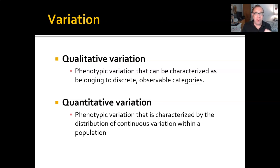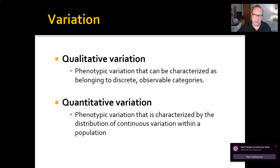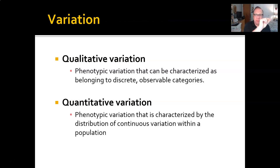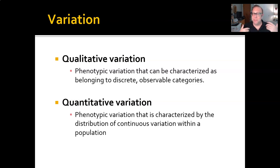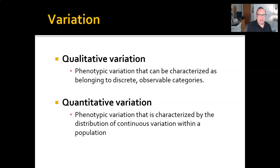Quantitative variation, on the other hand, is measurable. Therefore, there are in-between states. That's phenotypic variation characterized by the distribution of continuous variation within a population — a fancy way of saying that if you charted the measurement of this trait for every individual in the population, you'd end up with something like a bell curve, a standard distribution of variation. A great example of this is height. We can arbitrarily say you're 5'1" or 5'2", or 153 centimeters versus 163 centimeters.